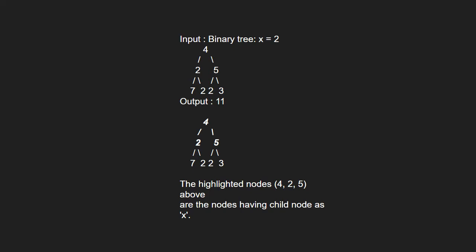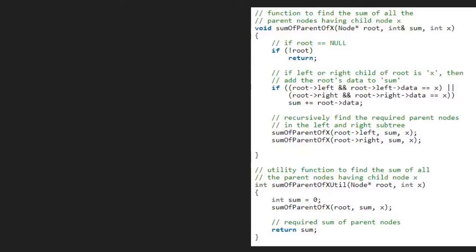Now let us see the algorithm. Let us also have a sample tree to test our algorithm. Let us assume that we have to find for x equal to 2. So we pass root, which is 4, and 2 to x, to the sumOfParentOfXUtil function. Next, we take a sum variable initialized to 0 and pass the root, sum and x to the sumOfParentOfX function.